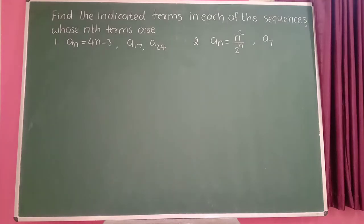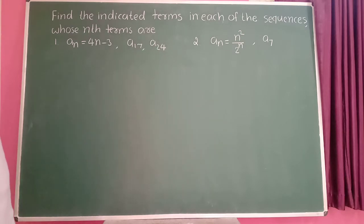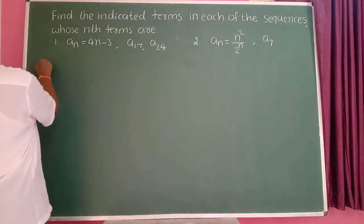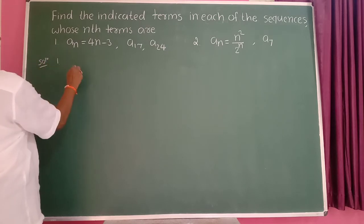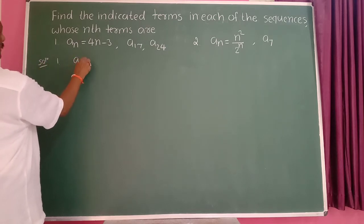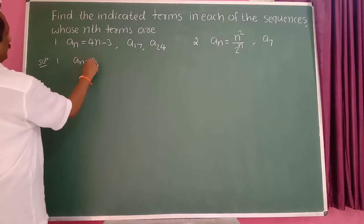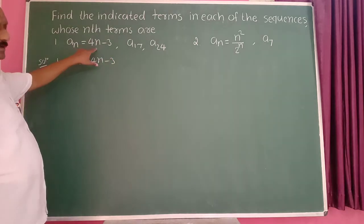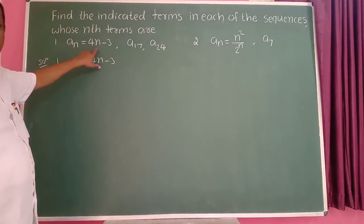Find the indicated terms in each of the sequences whose nth terms are given. In the first example, a_n is equal to 4n minus 3. This is the nth term.